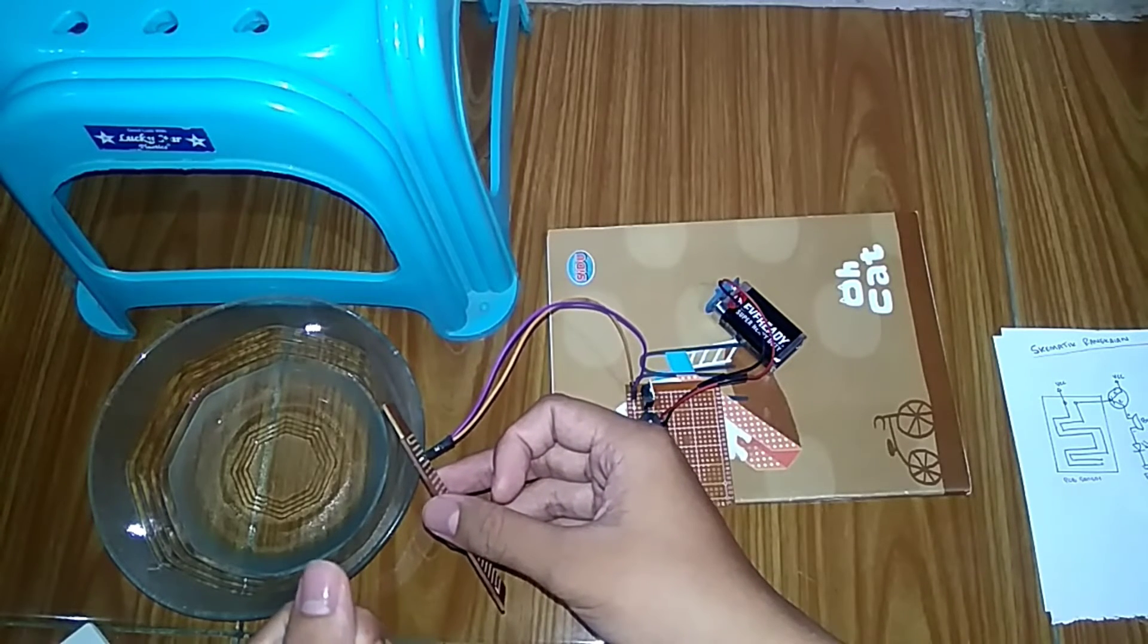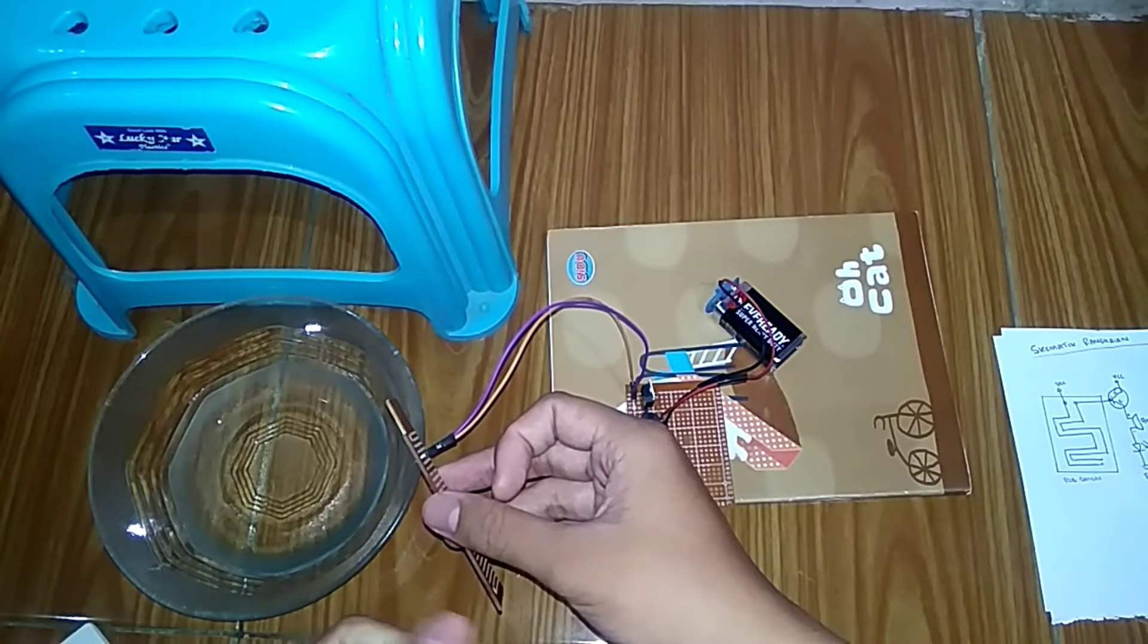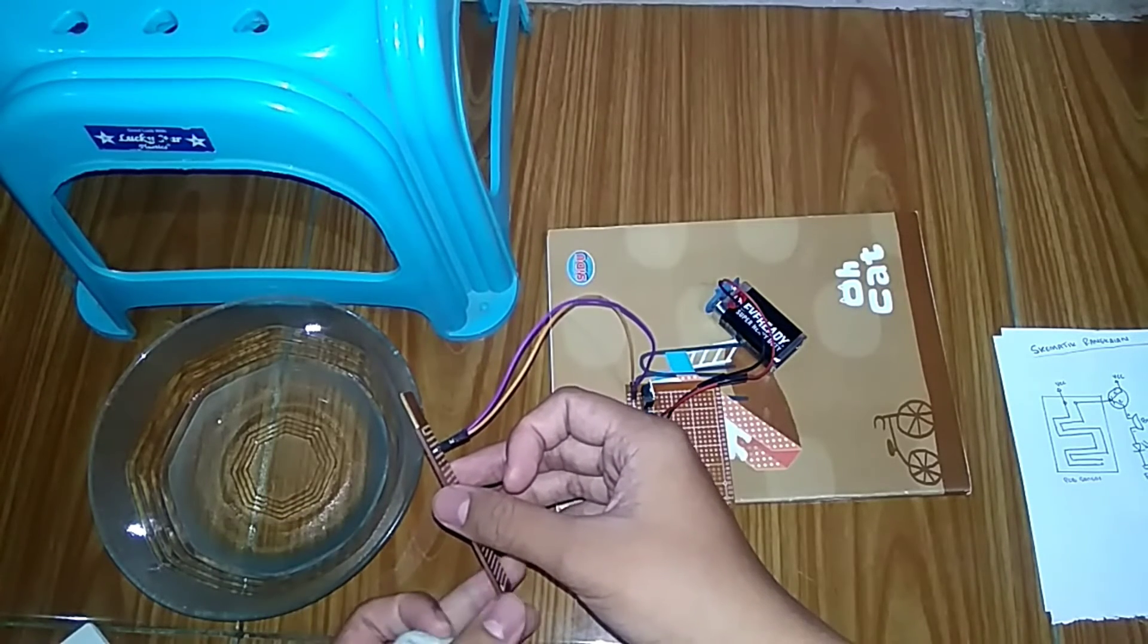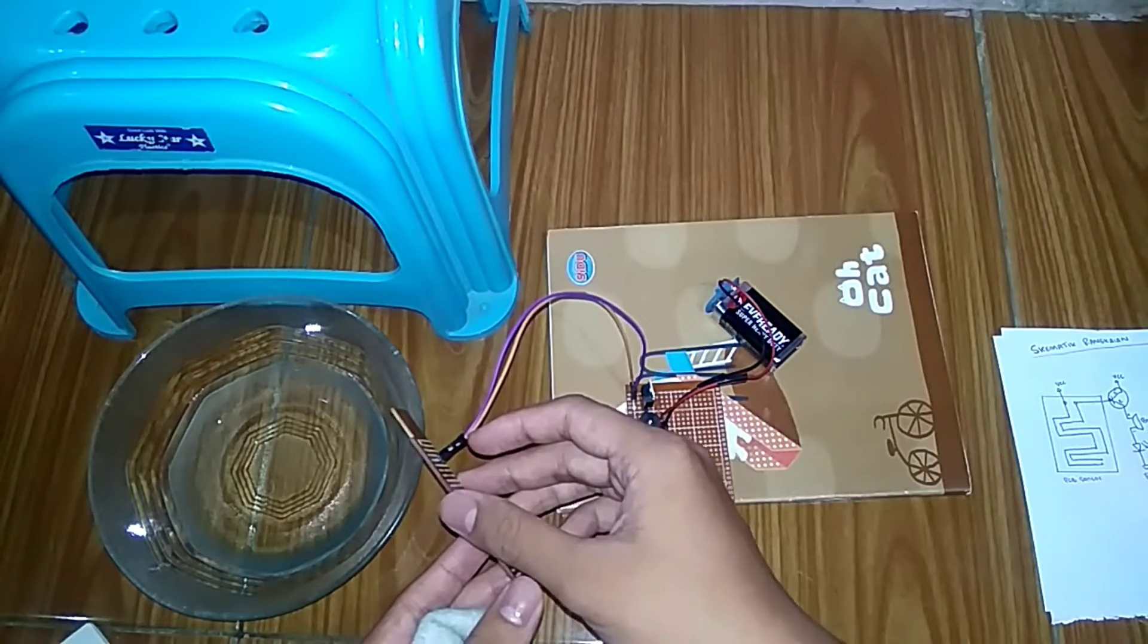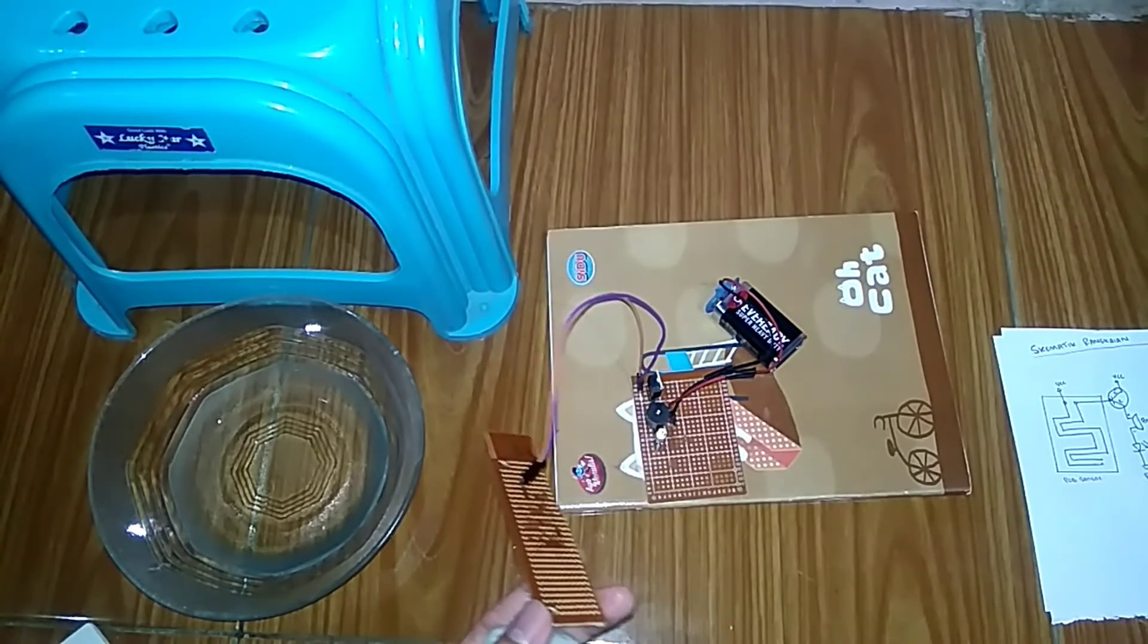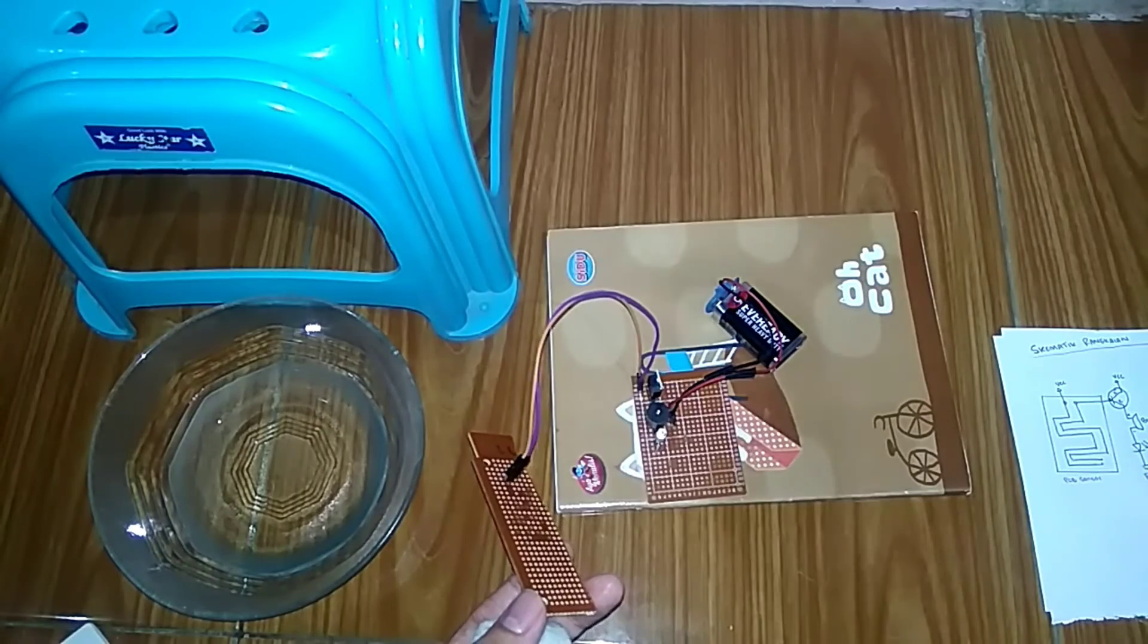Therefore, this sensor detects something touching it, which is water. So this is the working principle of a rain detection device. That's all from me, I apologize if there are any mistakes. Wassalamualaikum warahmatullahi wabarakatuh.